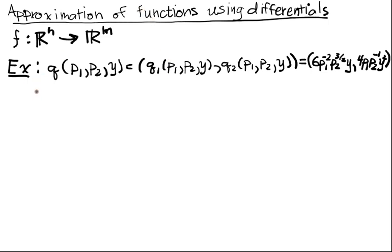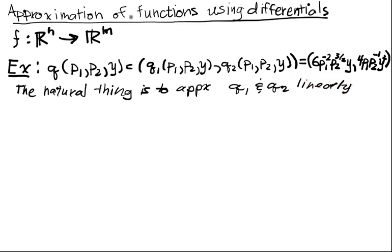We want to do a linear approximation. We want to figure out what the marginals of production are for this object for a general small change in P1, P2, and Y using a differential of this price vector and the income vector. That vector represents everything in my economy. The natural thing to do is to approximate Q1 and Q2 linearly using differentials.